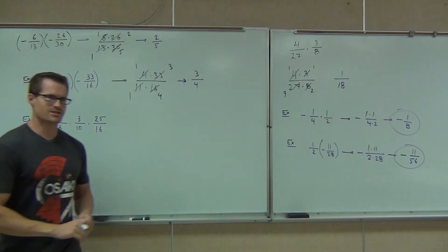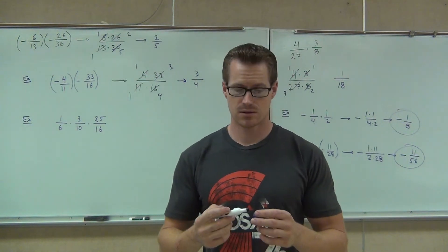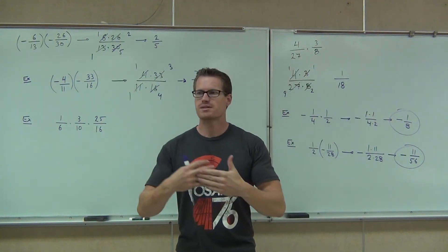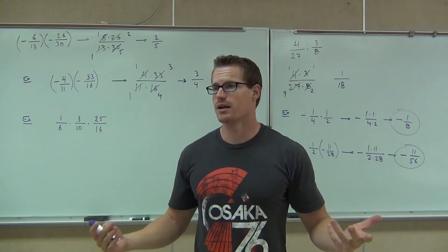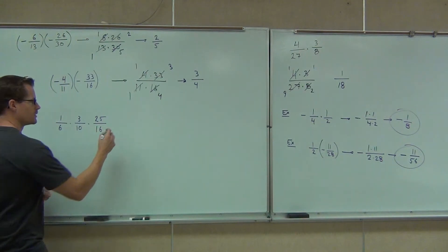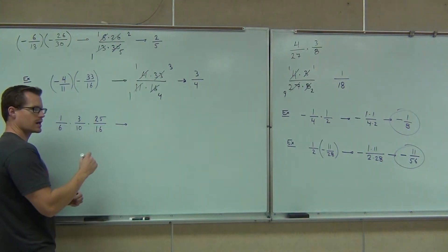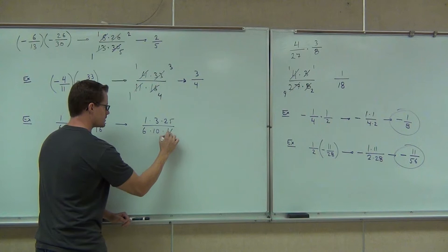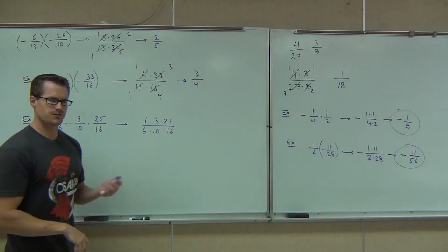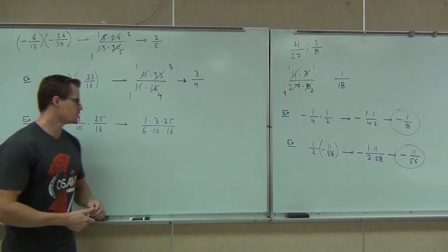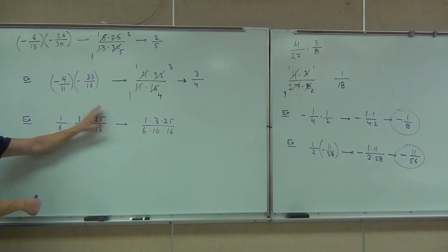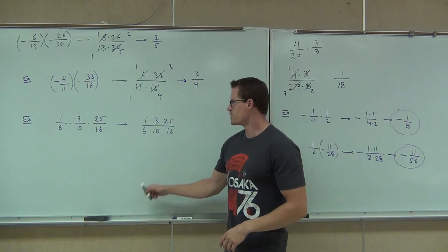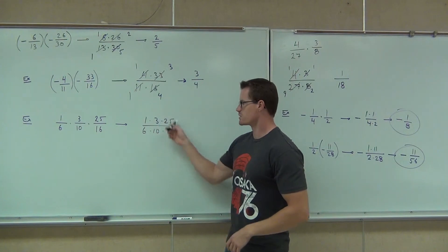Wait a second — there's more than two fractions up there. Can you still do it? Yeah. We're going to have the same exact steps. If we can write this as one fraction being multiplied together, we can simplify it. So the first step is write all three of these as one fraction. This is just 1 times 3 times 25, over 6 times 10 times 16. You could also do them two at a time — absolutely, that works too. I'm giving you a way to do this all at once.